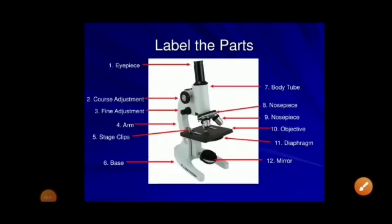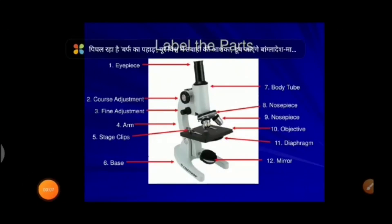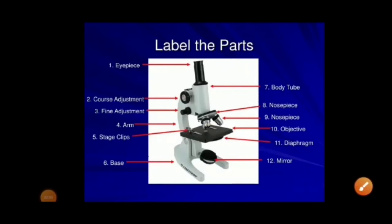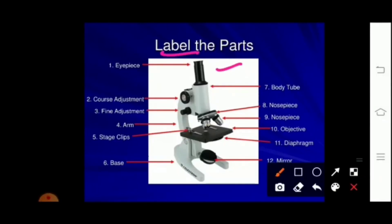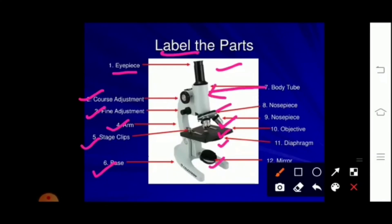I hope you have understood the different parts of the microscope. For better understanding, see your labelled diagram of the microscope. It consists of eyepiece, coarse adjustment, fine adjustment, arm, stage clip, base, mirror, diaphragm, stage, objective, nose piece, and the body tube of the microscope. Thank you for watching till the end.